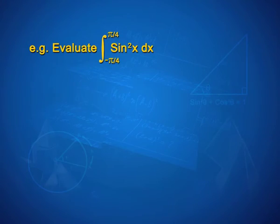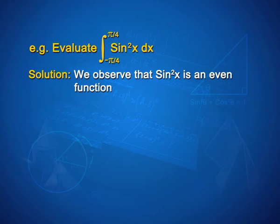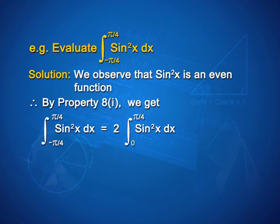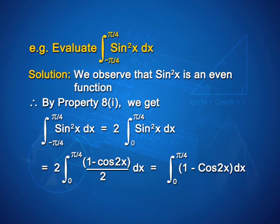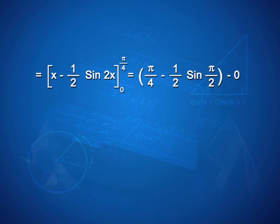Evaluate integral from −π/4 to π/4 of sin²x dx. We observe that sin²x is an even function. Therefore, by property 8, the integral = 2 · integral from 0 to π/4 of sin²x dx = 2 · integral from 0 to π/4 of (1 − cos 2x)/2 dx = [x − (1/2)sin 2x] from 0 to π/4. That equals π/4 − (1/2)sin(π/2) − 0 = π/4 − 1/2. On simplification, we get π/4 − 1/2.